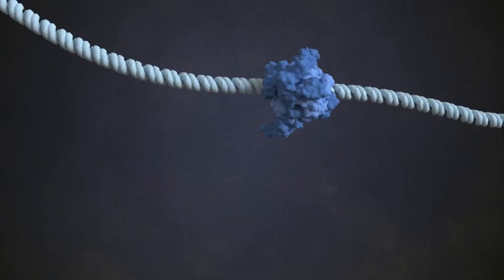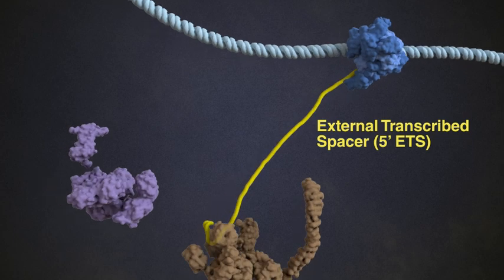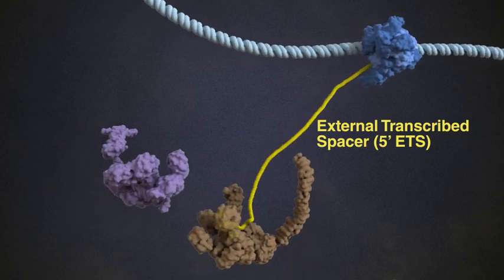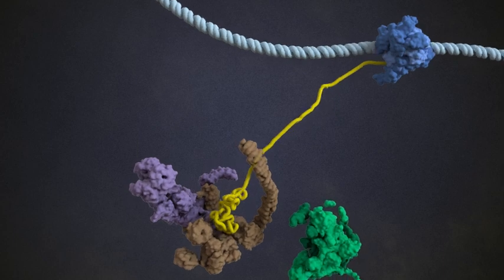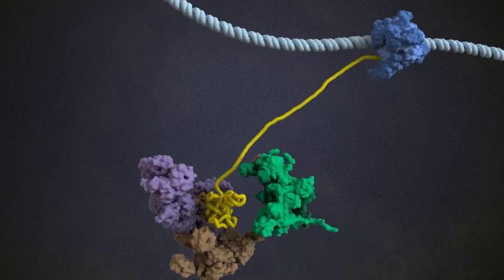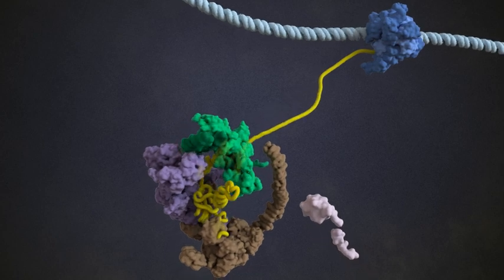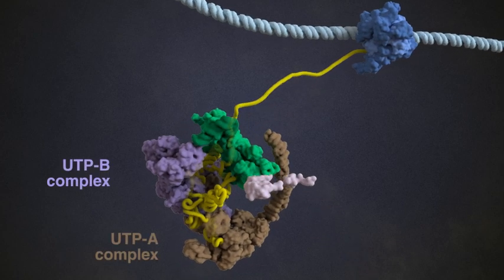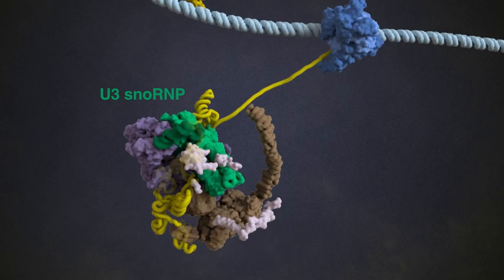The whole cascade-like process starts by transcription at the ribosomal DNA gene locus, catalyzed by RNA polymerase I. First, the 5' end of the pre-ribosomal RNA, called the 5' ETS, emerges from the gene locus depicted here in yellow. The 5' ETS RNA carries specific recognition motifs that recruit the first specific ribosome assembly factors, such as the UTP-A and UTP-B modules and the U3-snoRNP.